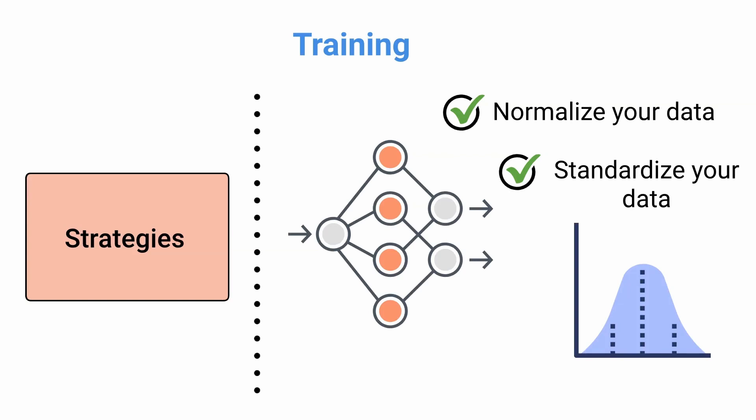While data normalization happens before training your neural network, you can normalize your data through the so-called batch normalization. It happens directly during your neural network training, specifically after the weighted sum and before the activation function.